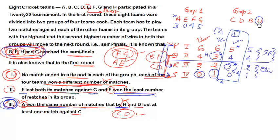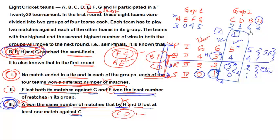For Group 2, using the (6,3,2,1) distribution: B wins 6 and H wins 3. In this case C beat D, so C wins 2 matches and D wins exactly 1 match — D won against H, which was the upset. So the final win tallies are: Group 1: G=5, F=4, A=3, E=0; Group 2: B=6, H=3, C=2, D=1.